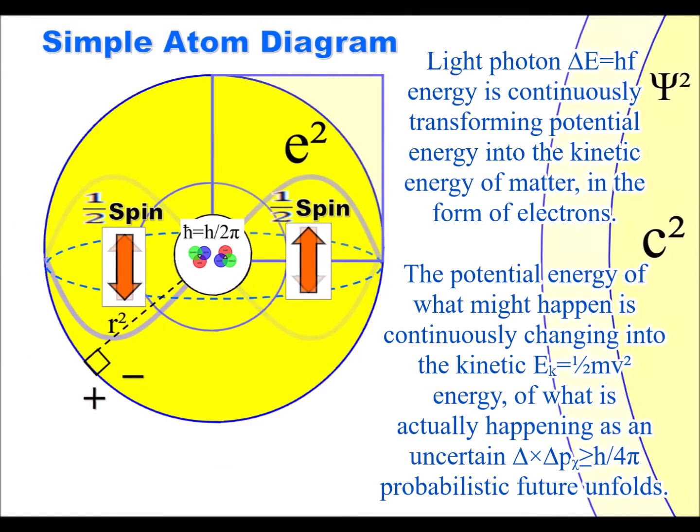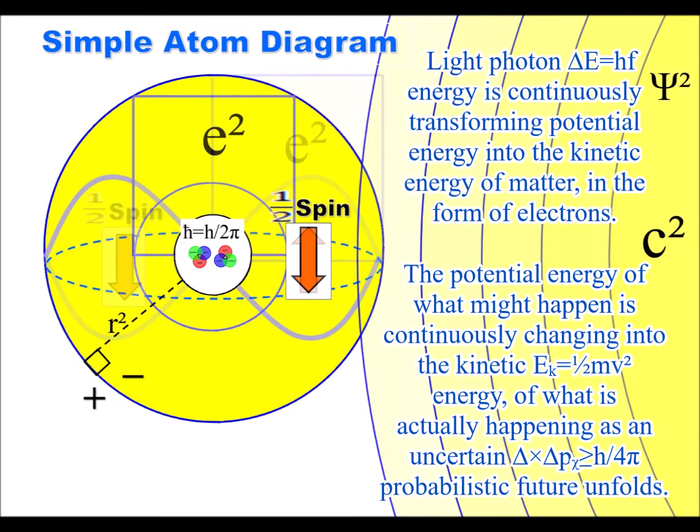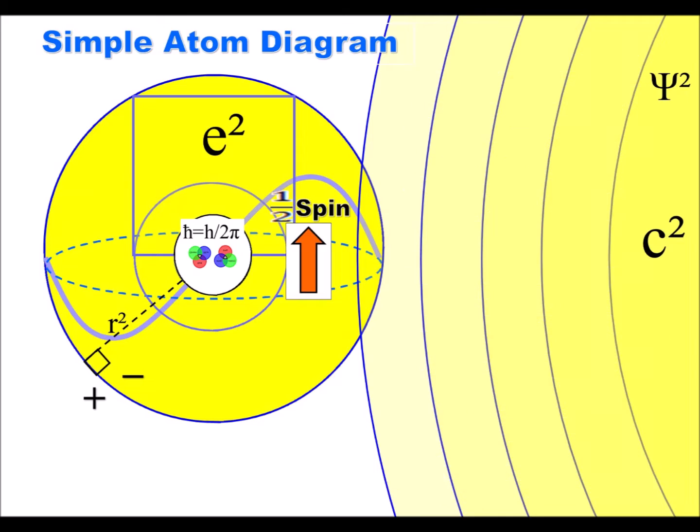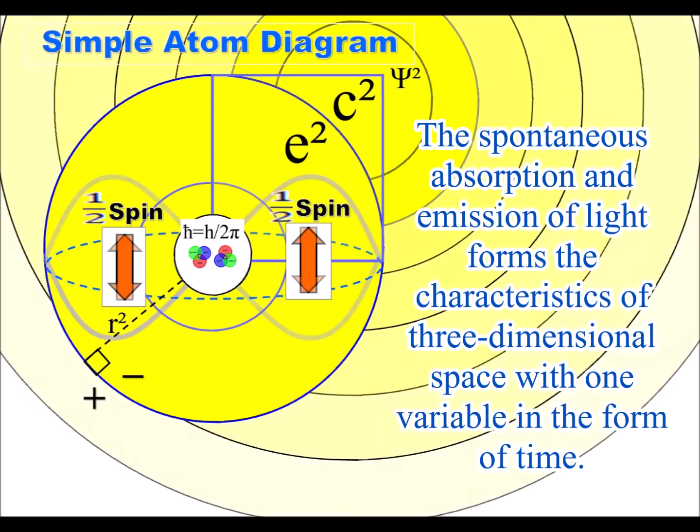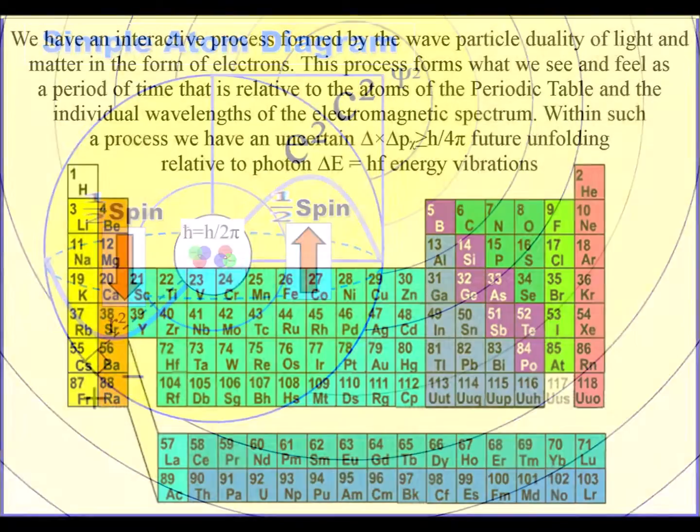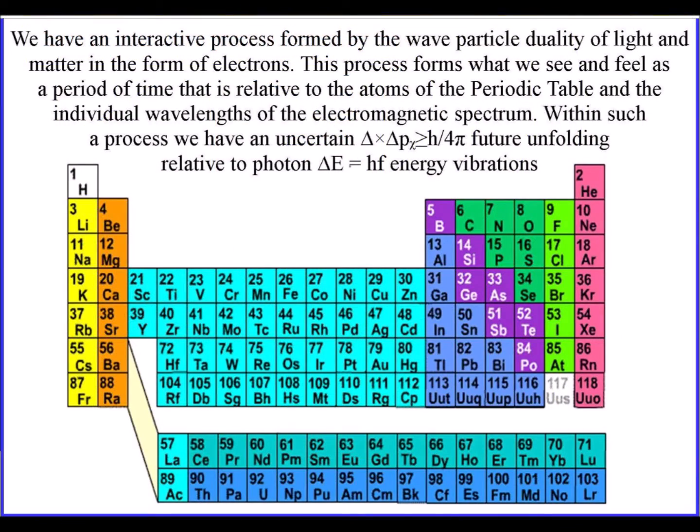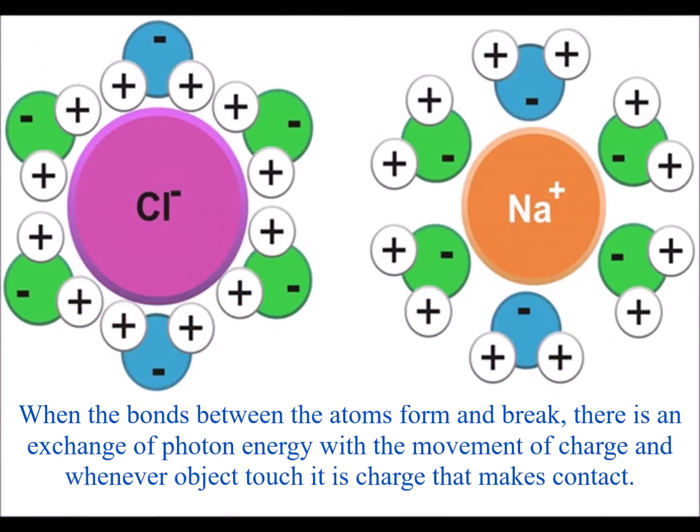Light interacts with the electrons of atoms, with quantum spin representing the uncertainty of everyday life. At the most fundamental level, I recommend that you see that video first, because this video explains how the process expands out relative to the atoms forming structure in our everyday life.